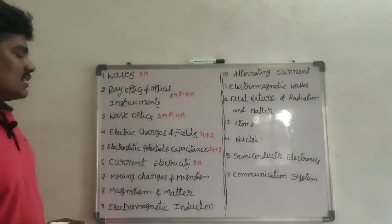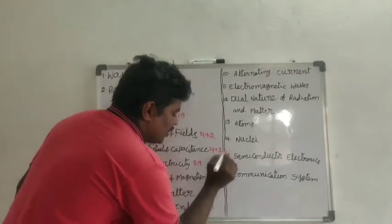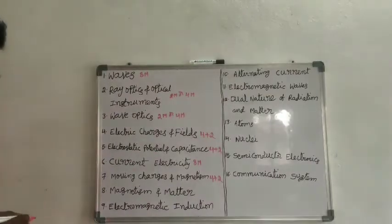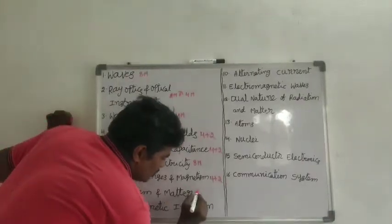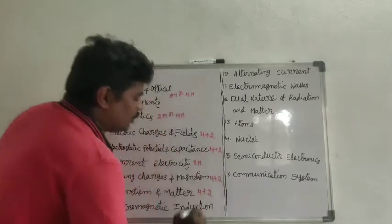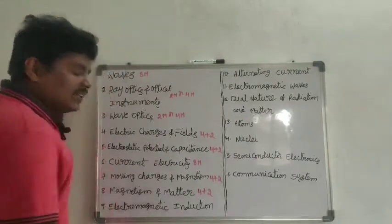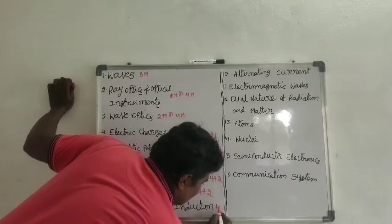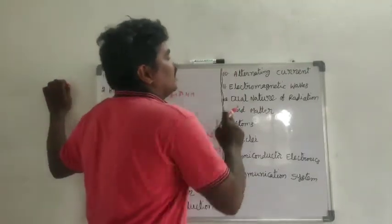Seventh one, moving charges and magnetism—we get 4 plus 2 marks. Eighth one, magnetism and matter—in this chapter also we get 4 marks and 2 marks questions. Ninth one, electromagnetic induction—we get only 4 marks questions.